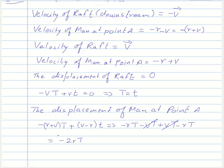The negative sign only shows that if you are on the motorboat, point A will be on the left - that is, on the negative x axis. Now, this displacement is given as L, but L is the absolute value. So taking the absolute value, 2rT equals L, which gives us r equals L divided by 2T. This is again the same answer as we got from the previous two cases - that is, when we solved the problem with the reference frame fixed to the ground.